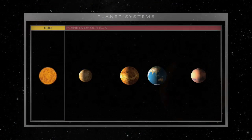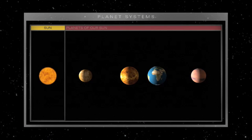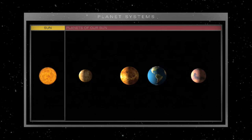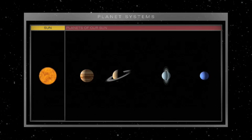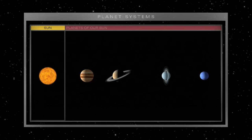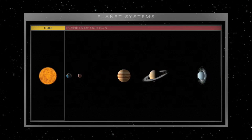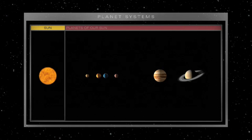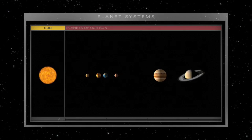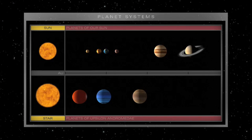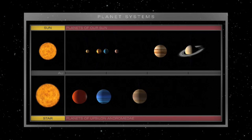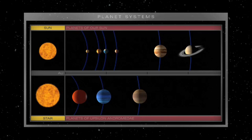In our solar system, small rocky worlds orbit close to the Sun, gas giants farther out. But around other stars, we're finding Jupiter-sized planets in Mercury-sized orbits, in part because they're the easiest for us to find.